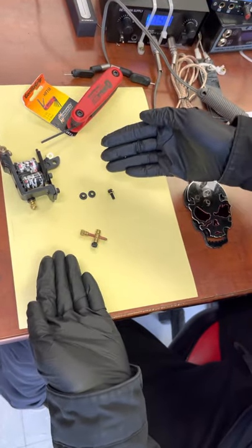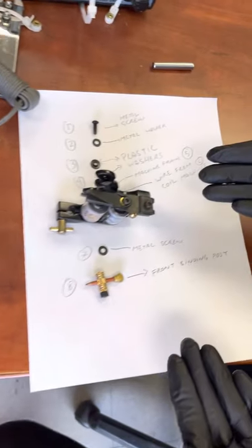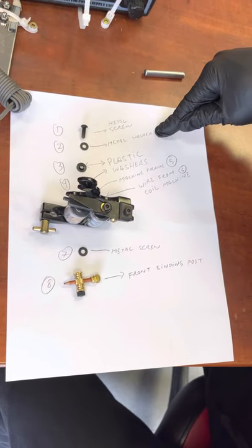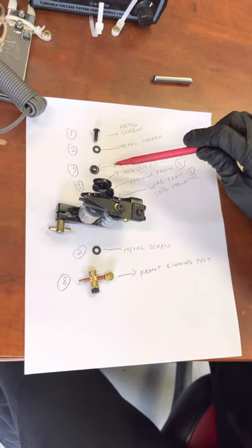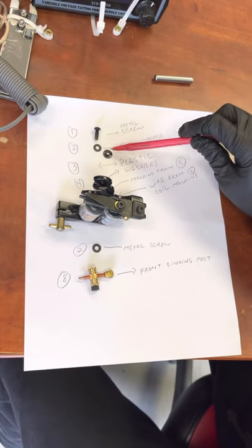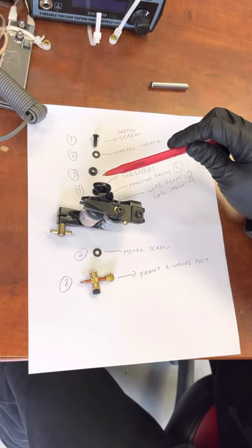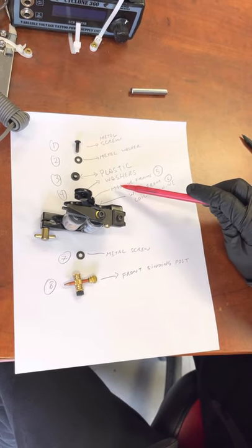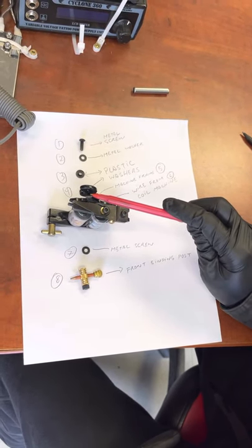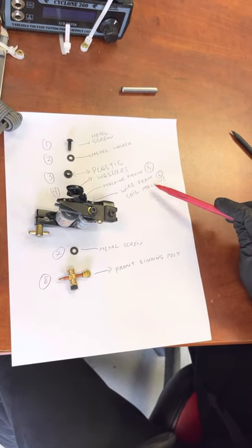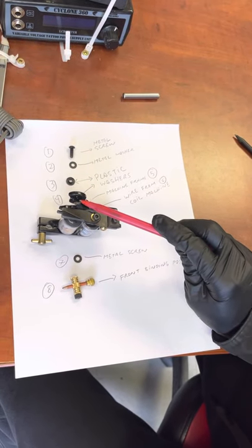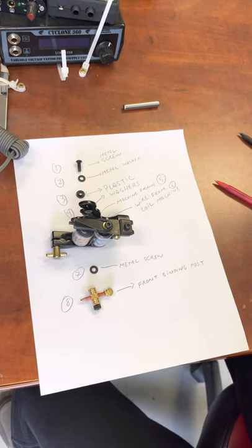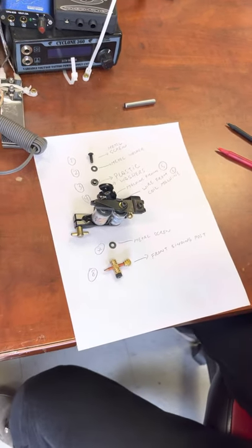When it's all unassembled, it should look like this. So we have the metal screw that goes into the metal washer and into the plastic washer, and it goes into the frame. And then another plastic washer, and then the wire from the coil machine. See this coil machine? There's the wire from it. And then the metal screw and the front binding post.